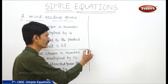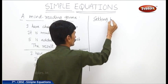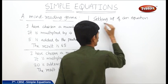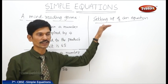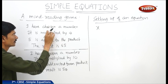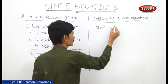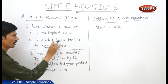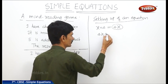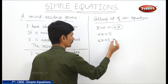Now, setting up of an equation. The unknown number is represented by x. It is multiplied by 4, so x multiplied by 4 equals 4x. Then 5 is added to the product, so we get 4x plus 5. Then the result is 65, so we write: 4x plus 5 equals 65.